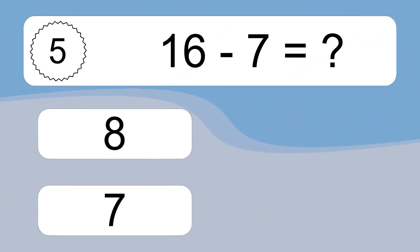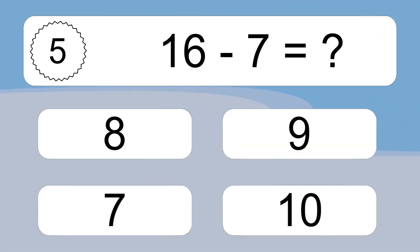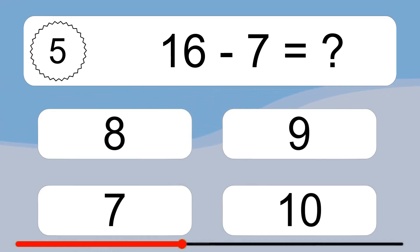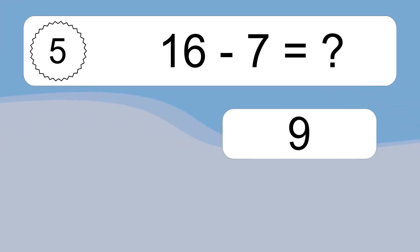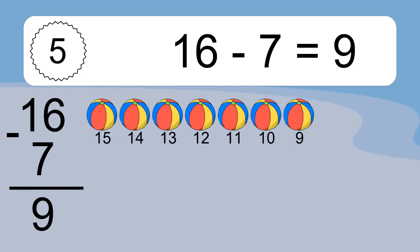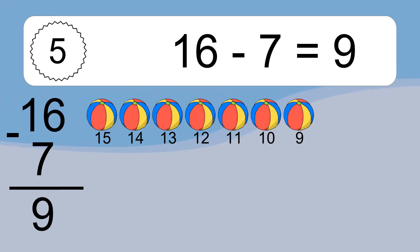16 minus 7 equals what? 16 minus 7 equals 9. Let's count it! 15, 14, 13, 12, 11, 10, 9.